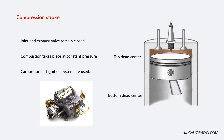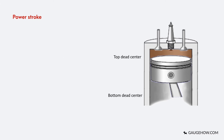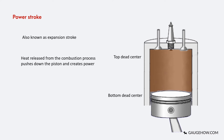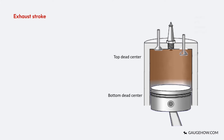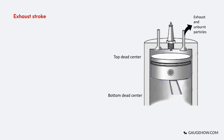The third stroke, the power stroke, is also known as the expansion stroke — the whole magic of power generation occurs here. Both valves remain closed. The heat released from the combustion process increases the pressure, which creates a thrust that pushes the piston down to bottom dead center and creates power output. Power is produced in this stroke only. The fourth and final stroke is the exhaust stroke, in which the exhaust valve opens as the piston moves upward from the bottom dead center. The piston pushes out burnt and residue gases to the atmosphere through the exhaust valve. This process is known as scavenging.